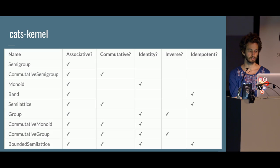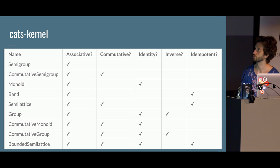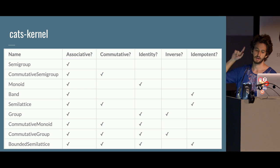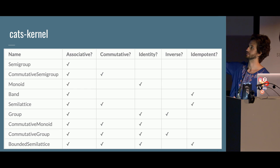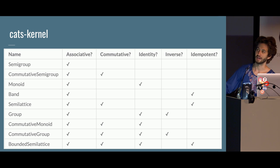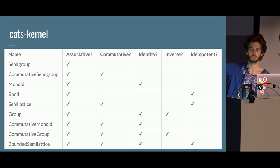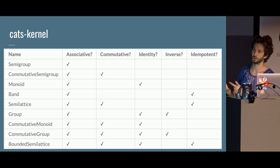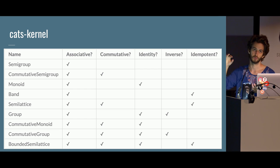So now we've learned about associativity, commutativity, identity laws, invertibility, and idempotency. Looking at the type classes on the left of the Cats diagram: we have band — a semigroup that is idempotent but not commutative; commutative monoid and commutative group; and bounded semilattice — a monoid that is also commutative and idempotent, or equivalently a semilattice that also has an identity.